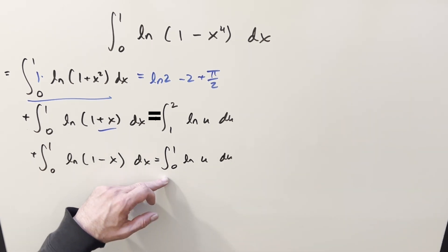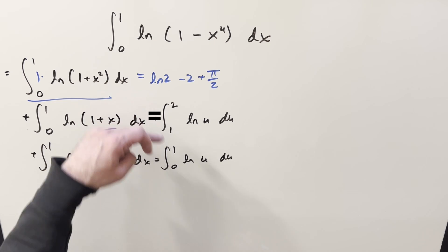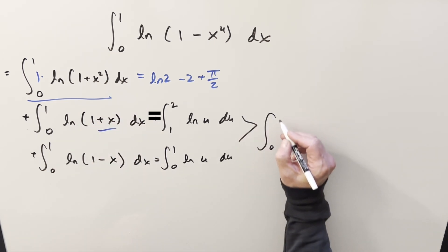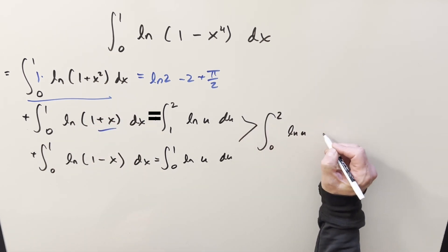But now that we have the same variable in the bounds, there's no break. We're going zero to one, one to two. I can combine these and write these as the integral from zero to two, ln u du.